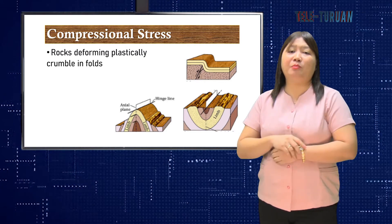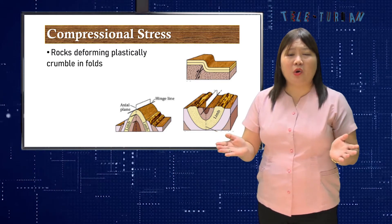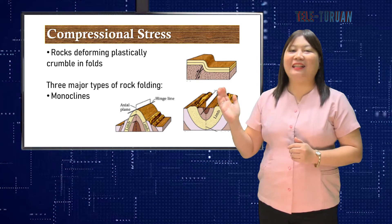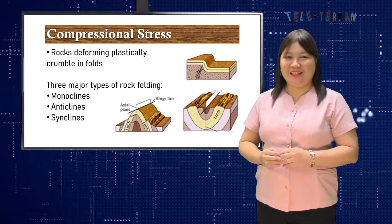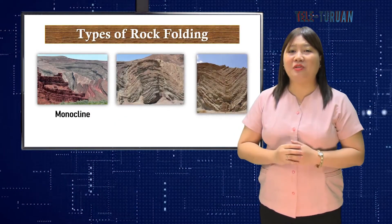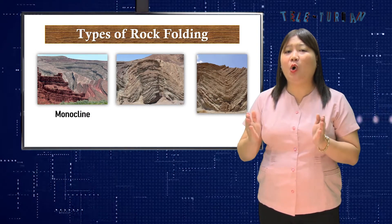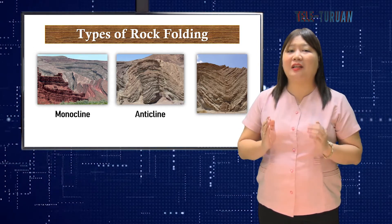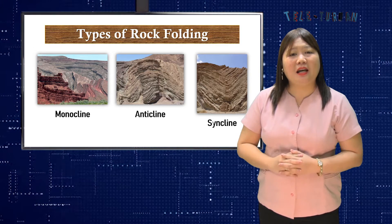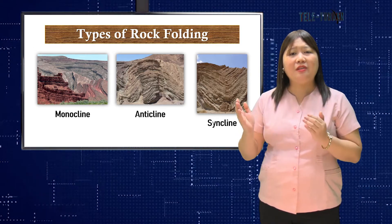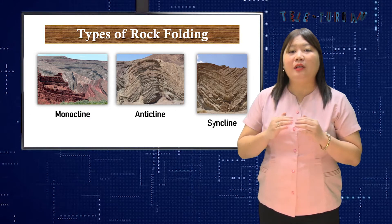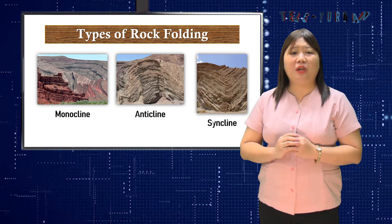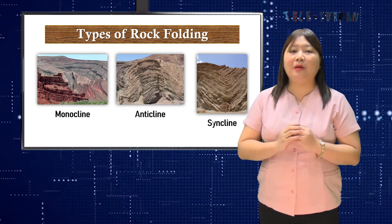If the rocks experience more stress, they may undergo more folding or even fracture. There are three major types of rock folding: monoclines, anticlines, and synclines. A monocline is a bend in rock strata that are otherwise uniformly dipping or horizontal. An anticline is formed by the folding of rock strata into an arch-like shape. A syncline is a fold that bends downward, causing the youngest rocks to be at the center and the oldest on the outside — a trough of stratified rock in which the beds dip toward each other from either side.